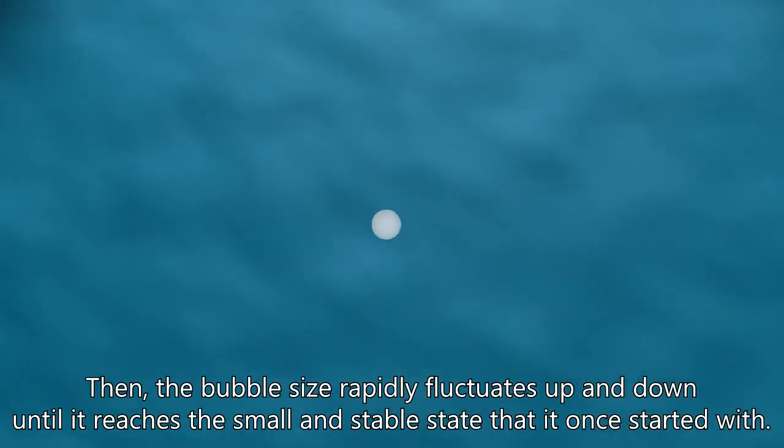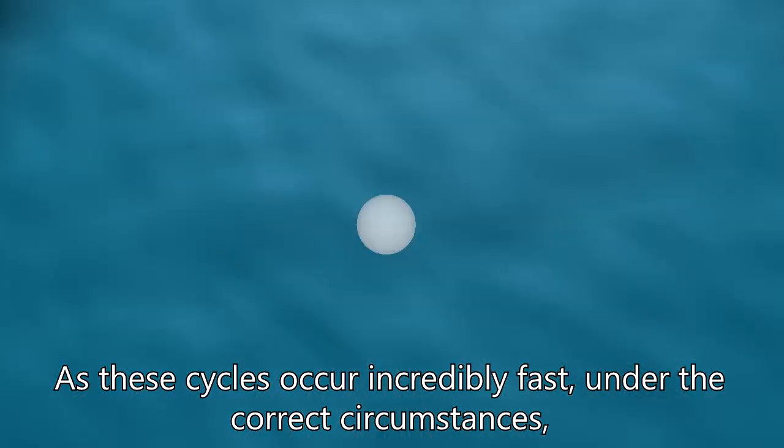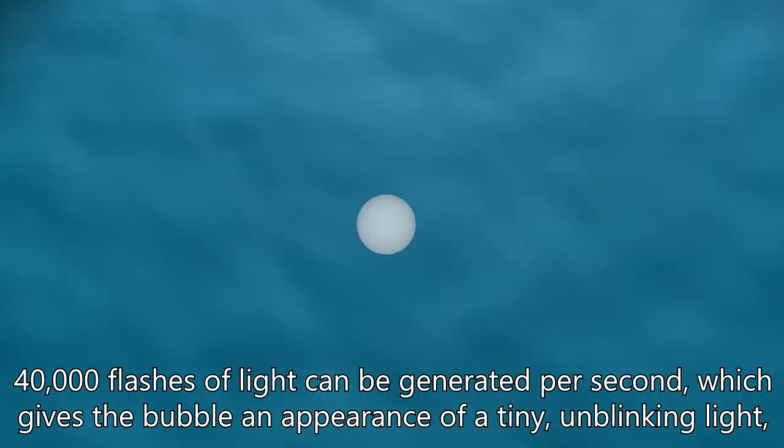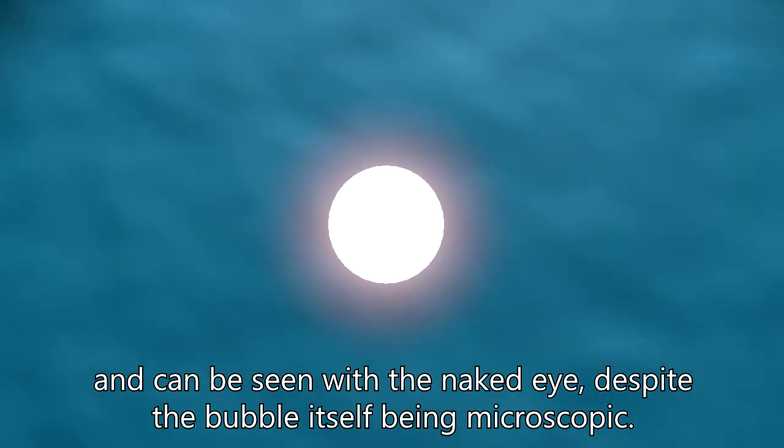Then, the bubble size rapidly fluctuates up and down until it reaches the small and stable state that it once started with. As these cycles occur incredibly fast under the correct circumstances, 40,000 flashes of light can be generated per second, which gives the bubble an appearance of a tiny, unblinking light and can be seen with the naked eye despite the bubble itself being microscopic.